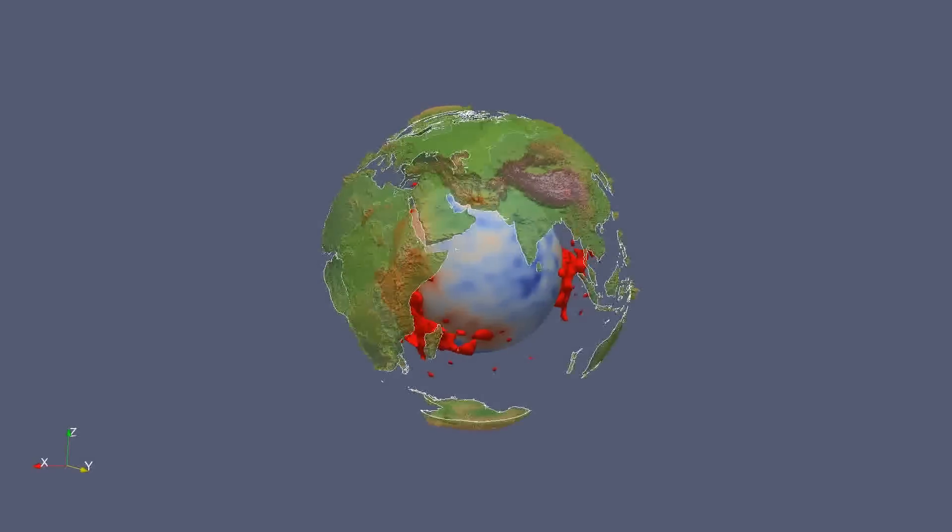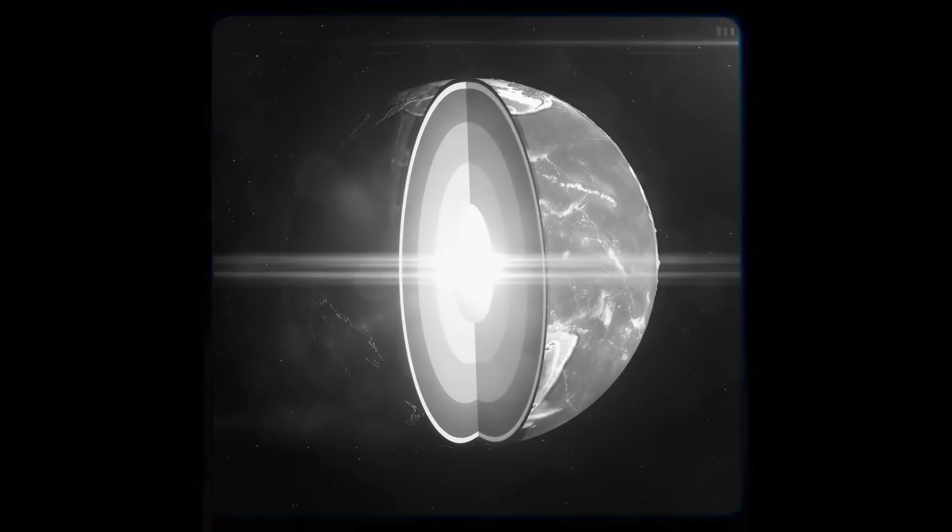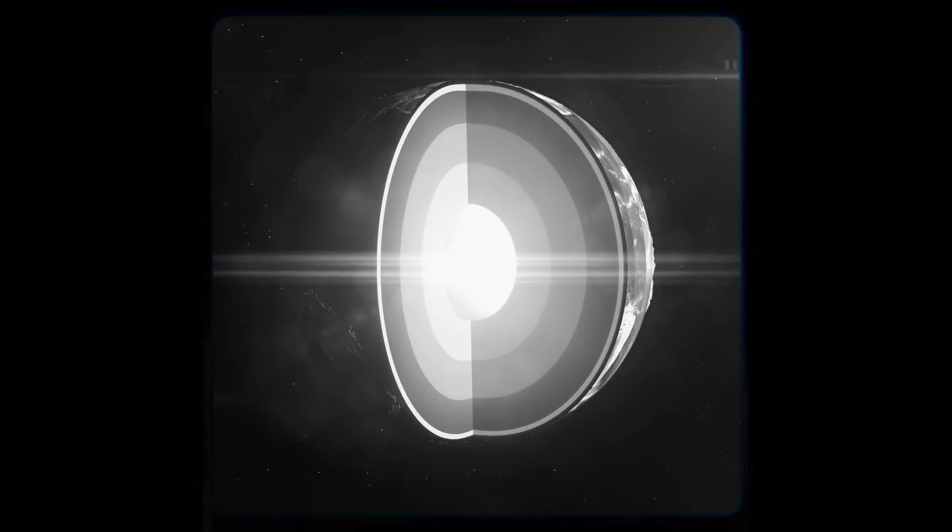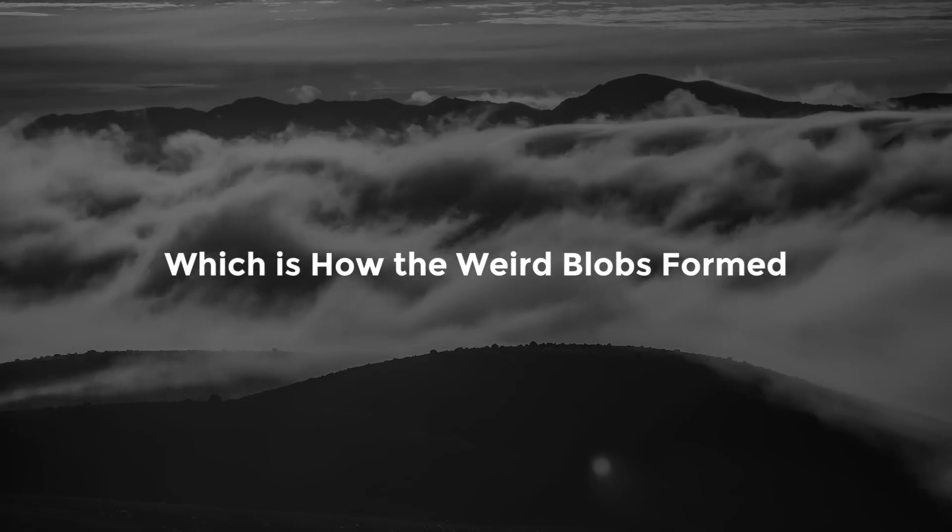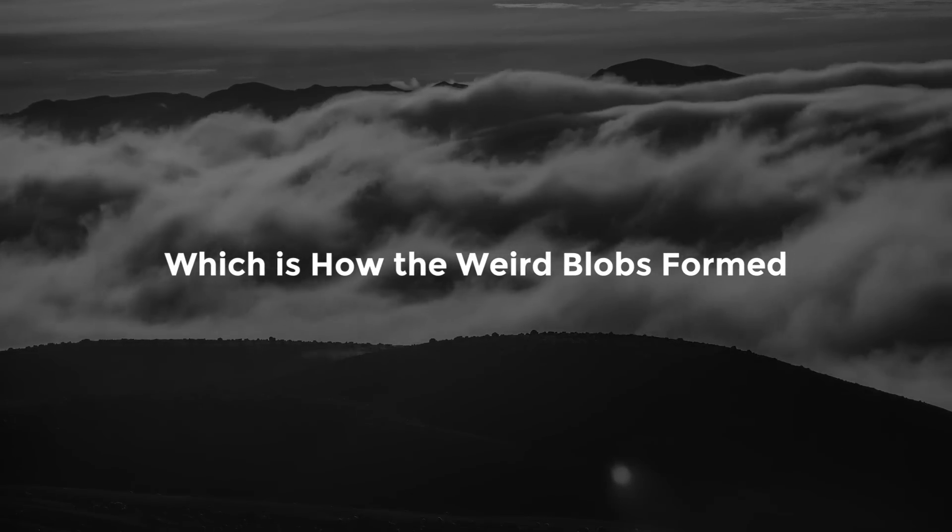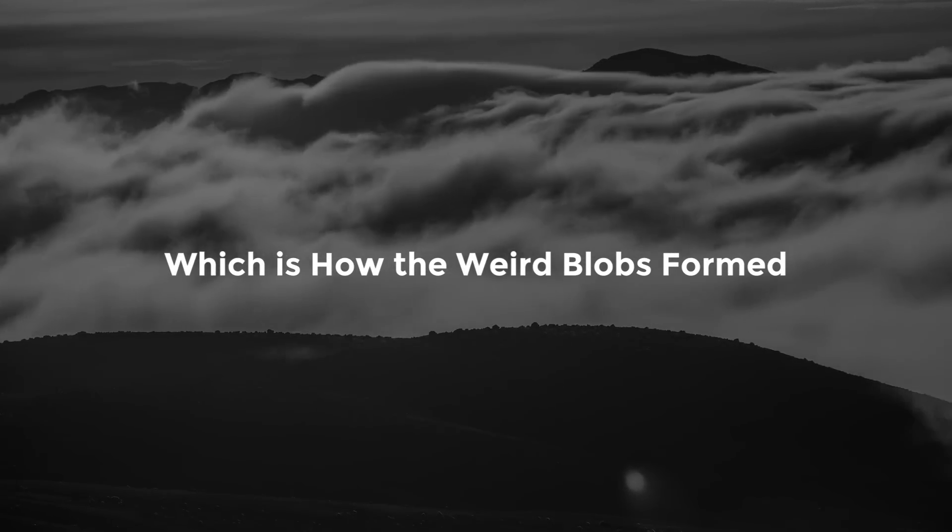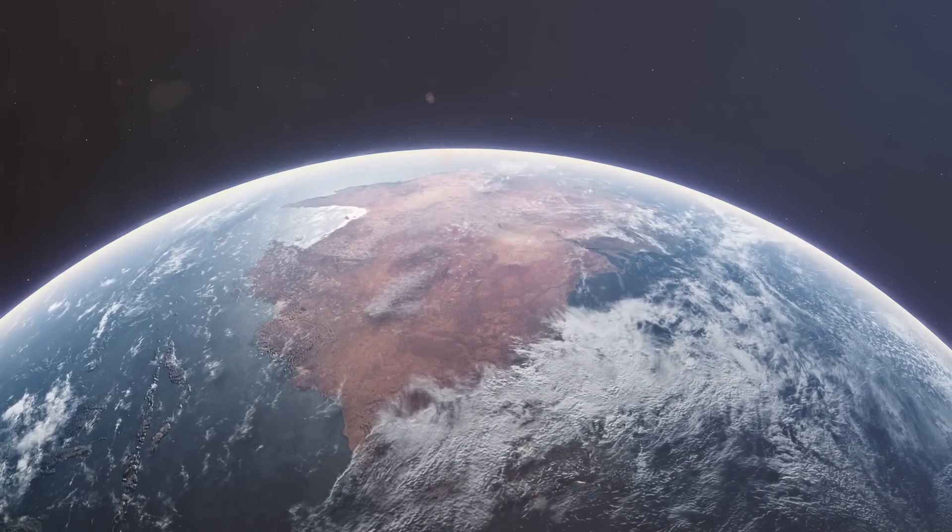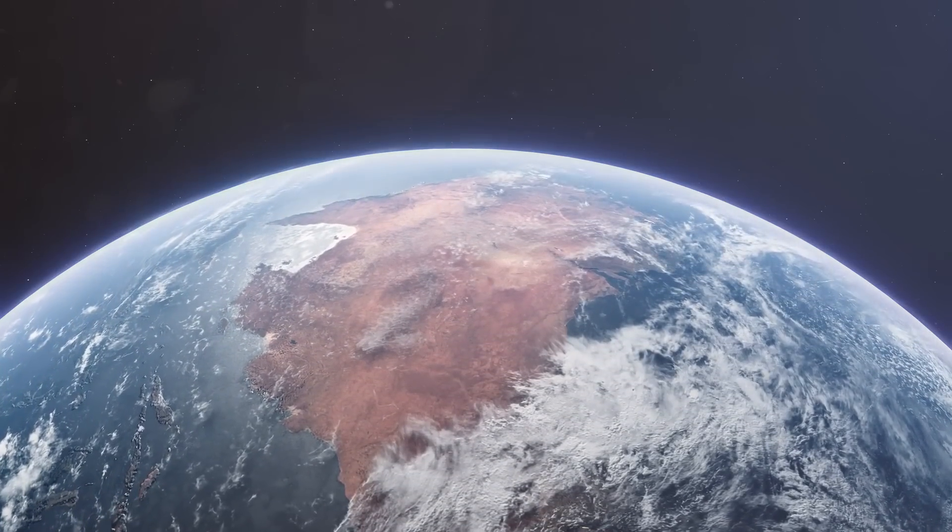A third theory holds that iron from the Earth's core somehow leaked into the mantle after the planet had already formed and was integrated into the rock in certain places, which is how the weird blobs formed. However, this hypothesis is not widely accepted because there is now no clear reason why this might occur.